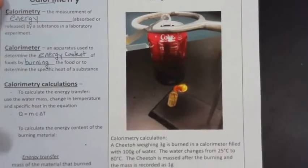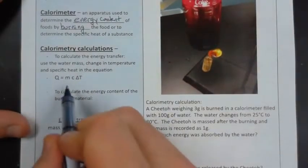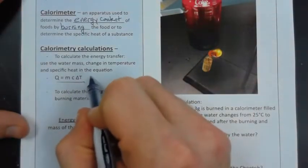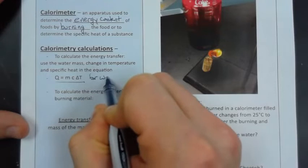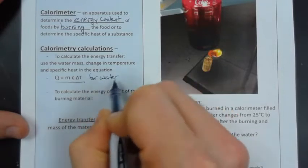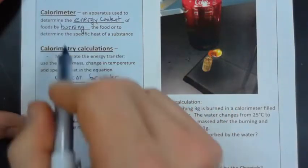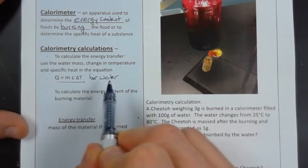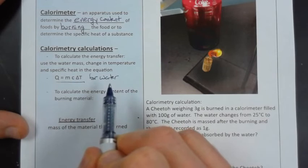How are we going to do that? We're going to use Q equals MC delta T, but this equation is just going to be used for water. Water is actually our calorimeter - that's the device that's absorbing the energy. So we're going to measure the energy the water absorbs by taking its temperature before and after.